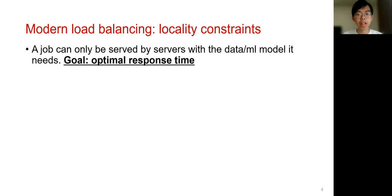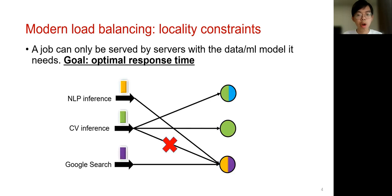However, the assumption that jobs can be done in all servers will fail in new live applications. Indeed, in modern load balancing, the dispatcher has to take into consideration the so-called locality constraints, that is, a computing job can only be served by servers with the data, specifically the trained machine learning models the job needs. For example, suppose a user submits a query of a pre-trained MLP model, that is the yellow job here. Then the dispatcher can only dispatch this job to the third server because only this server has the MLP model.